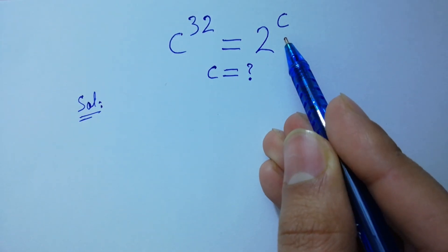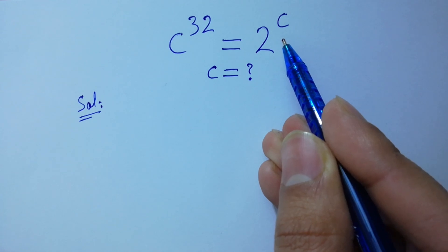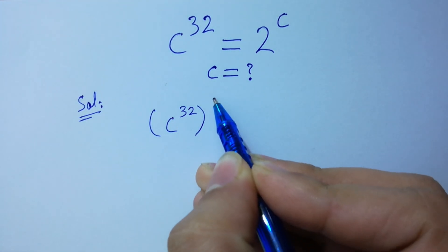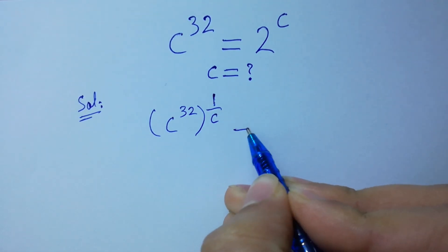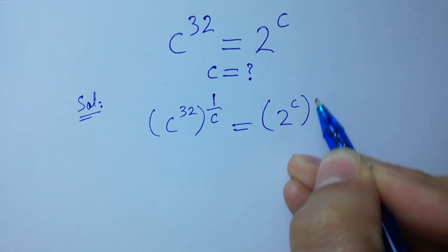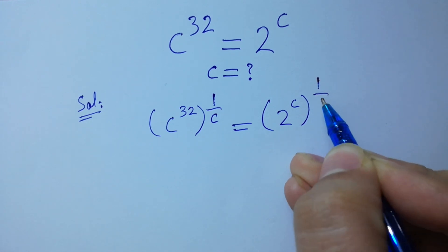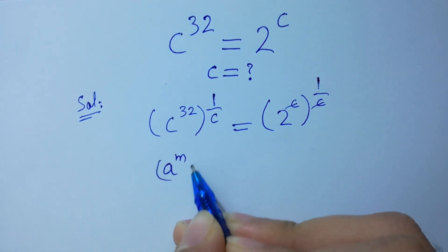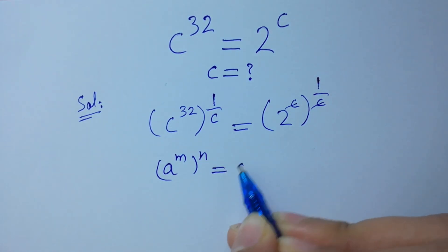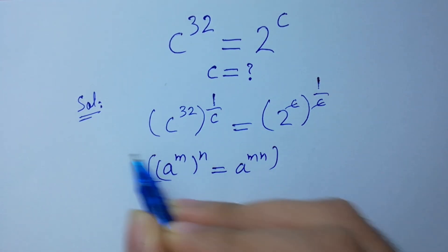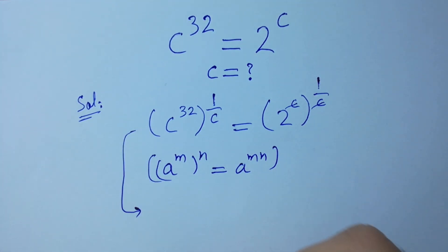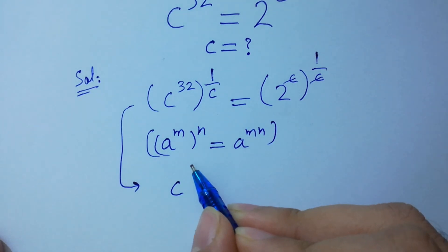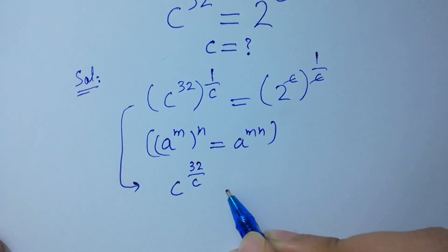To get rid of this C, take power 1 over C on both sides. Since C to the power 32, to the whole power 1 over C, equals 2 to the power C to the whole power 1 over C. C and C will be cancelled. Since A to the power M to the whole power N equals A to the power MN, so we have C to the power 32 times 1 over C, which gives 32 over C, equal to 2.